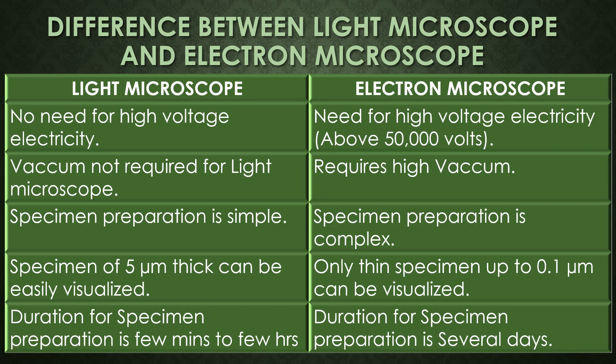In the light microscope there is no need for high voltage electricity, but in the electron microscope it needs high voltage electricity — above 50,000 volts — for focusing the objects. Vacuum is not required for the light microscope, but the electron microscope requires a high vacuum.